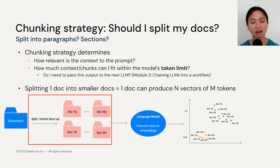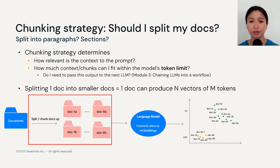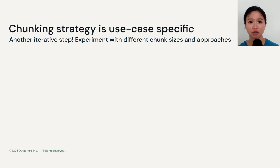Your chunking strategy may determine how relevant the chunk returned is to the query itself. You also need to think about how much context or how many chunks you can fit within the model's token limit, and whether you need to pass this output to the next LLM — something we'll talk about in Module 3. Chunking best practices are not very well defined, but in machine learning we talk about developing a model as an iterative process, and you should absolutely treat chunking strategy the same way. Experiment with different sizes and different approaches.